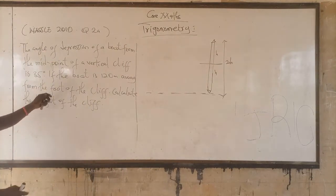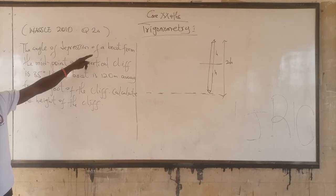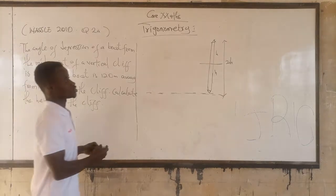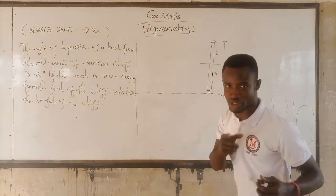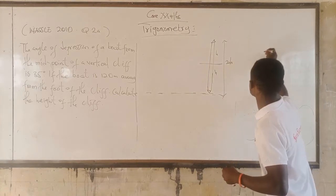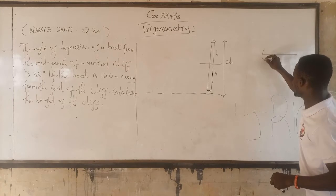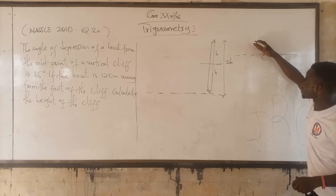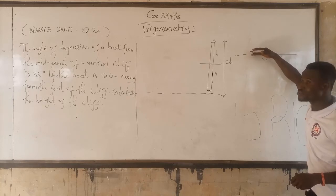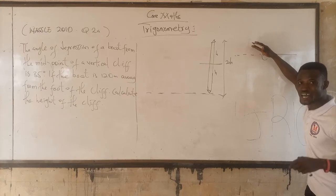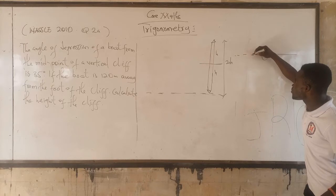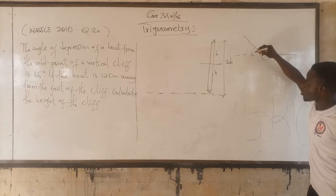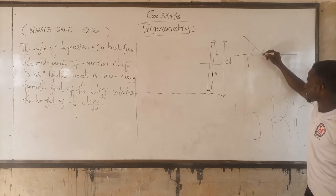So the angle of depression: the angle of depression of a boat from the midpoint of a vertical cliff is 35 degrees. Now watch — if your horizontal level is like this, the angle of depression will go like this, while the angle of elevation will be like this. But the angle of depression goes downward like this.